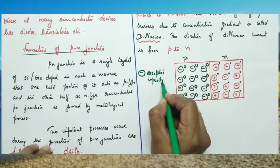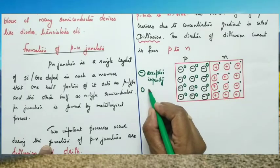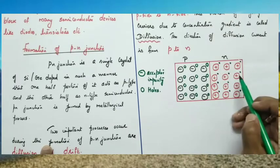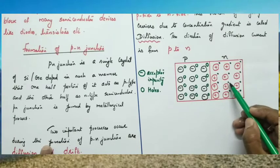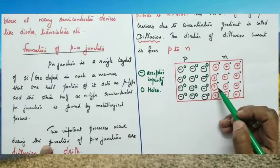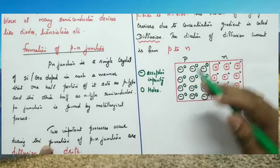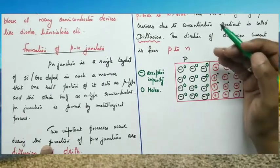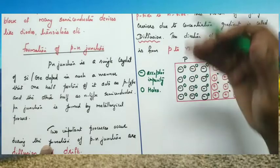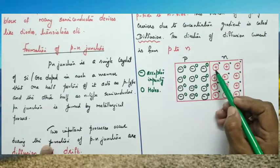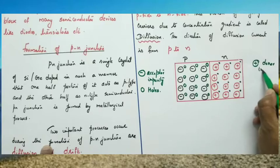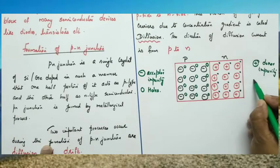So, minus means the acceptor impurity and the circles represent the holes. In the N type semiconductor, majority carriers are electrons — the dots represent electrons. The plus signs represent the donor impurity. Because in an N type semiconductor, the impurity donates one electron for conduction, so the impurity gets a positive charge.